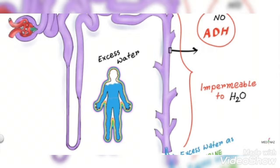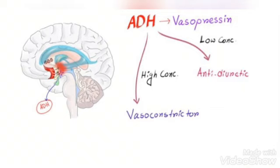When water is in excess in the body, it needs to be eliminated — a diuretic effect should occur. In that case, there will be no secretion of ADH, because it is anti-diuretic hormone — it would cause absorption, not excretion. So to eliminate excess water, ADH is not secreted, and the tubules of the nephron — collecting and distal convoluted tubules — will be impermeable to water. If ADH is secreted at low concentration, it will produce an anti-diuretic effect causing water reabsorption. But if secreted at higher concentration, it will produce vasoconstriction — because ADH is also known as vasopressin — so at higher concentration it produces vasoconstriction.